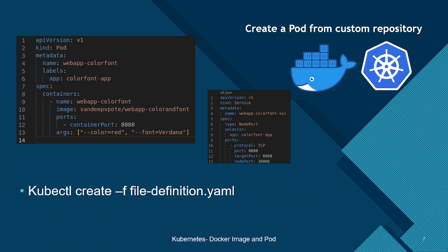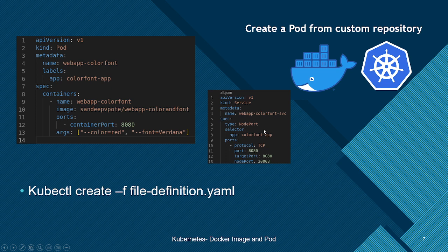The host can access the application from that service port. We'll create another definition file of kind Service, named web-app-color-font-svc, with type NodePort. The ports mentioned are the application port 8080, the target port, and the node port 30008. The host will be able to access the app based on the node IP address and the defined port. The service knows which pod to serve based on a selector — we use app as a key and color-font-app as the value, matching the label we assigned to the pod.